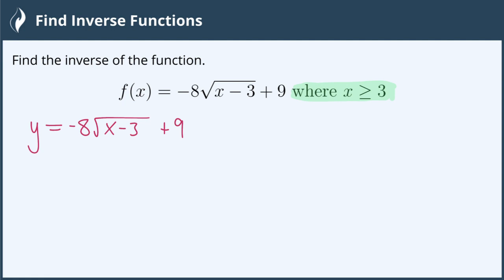Now that we've done that, we can swap our x and our y, because remember inverse functions mean we're doing the opposite. We're flipping our x and our y. So instead of y equals, we now have x equals. And instead of negative 8 times the square root of x minus 3, we're now going to have negative 8 times the square root of y minus 3, and we still have our plus 9.